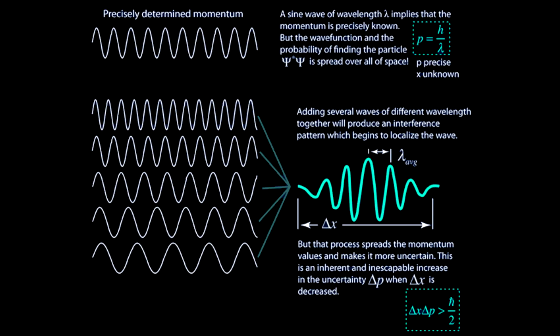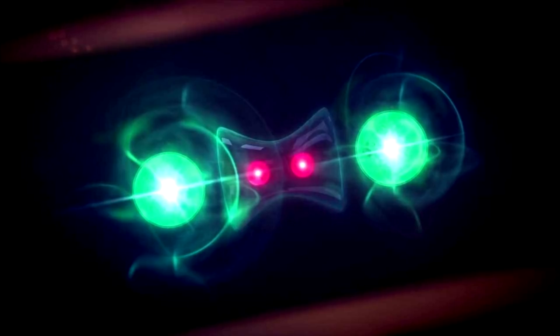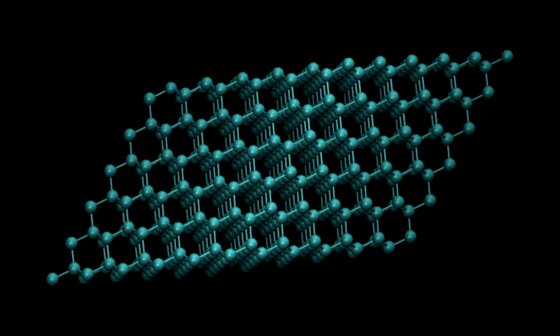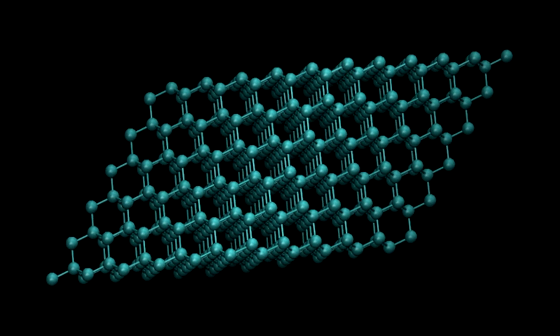On the quantum level all kinds of weird things can happen. You have the uncertainty principle, quantum entanglement, superpositions, wave particles, and as today's topic: quantum fluctuations, or quantum flux for short.